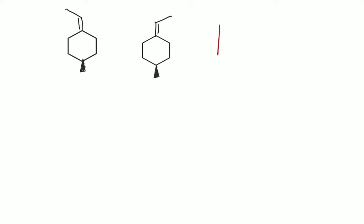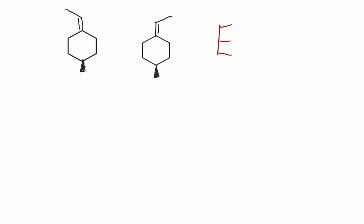The answer is that these two are enantiomers. The reason why is that it's important to note that the orientation of double bonds has an effect on stereochemistry. The fact that the double bond is facing in different directions means we can't really gauge the chiral center right now as it is. So what we have to do is flip this one over, or at least one of them, so that the double bond can align.